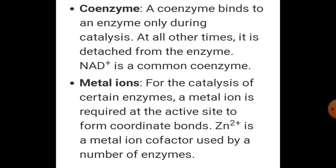The last type of cofactor is metal ions. For catalysis of certain enzymes, a metal ion is required at the active site to form coordinate bonds. Metal ions are required to form coordinate bonds with side chains at the active site, and at the same time form one or more coordinate bonds with the substrate. For example, zinc is a cofactor for the proteolytic enzyme carboxy peptidase.